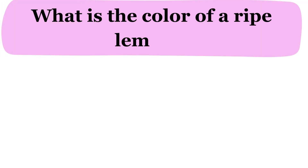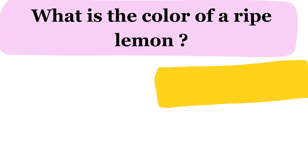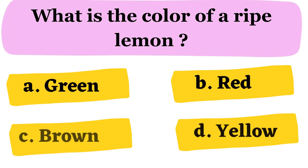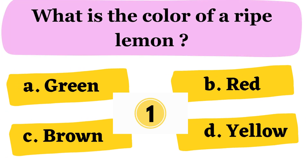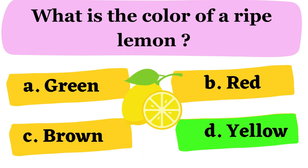Next question. What is the color of a ripe lemon? A. Green B. Red C. Brown D. Yellow. The correct answer is option D. Yellow.